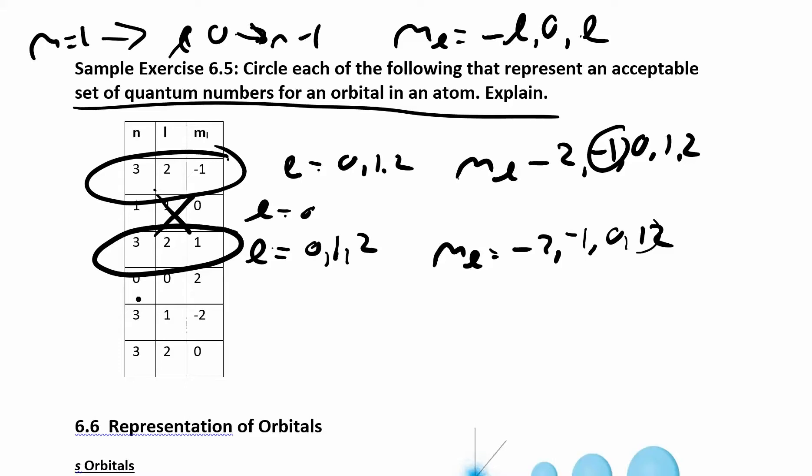The next one, n is 0. Now n can't be 0. n can never be 0. So this is not an acceptable set of quantum numbers. Remember what the quantum numbers are doing? They're trying to describe where the electron lives. They're describing the orbital. n tells you about the energy level. Energy level starts at 1, so it can't be energy level 0. l tells you about the shape. Do I have an S, P, D orbital? What do I have? It depends on what energy level I'm in.